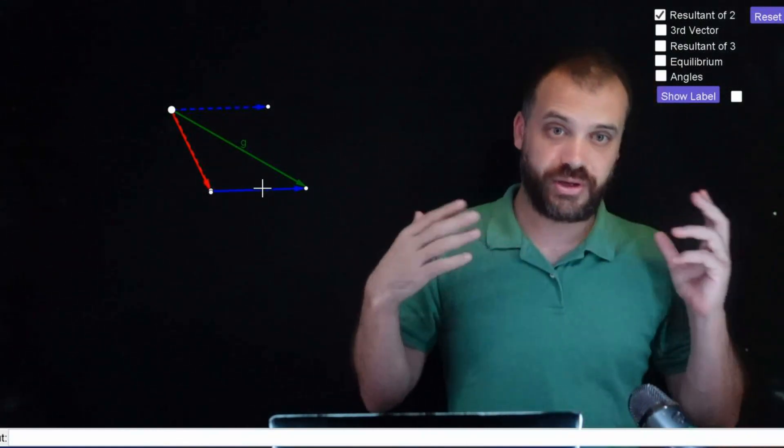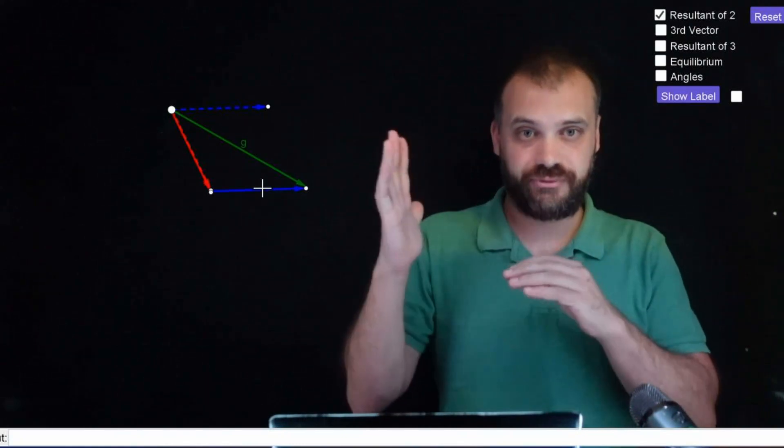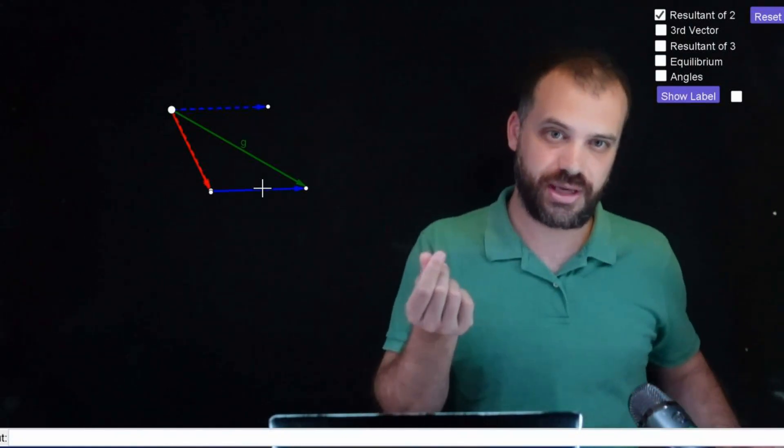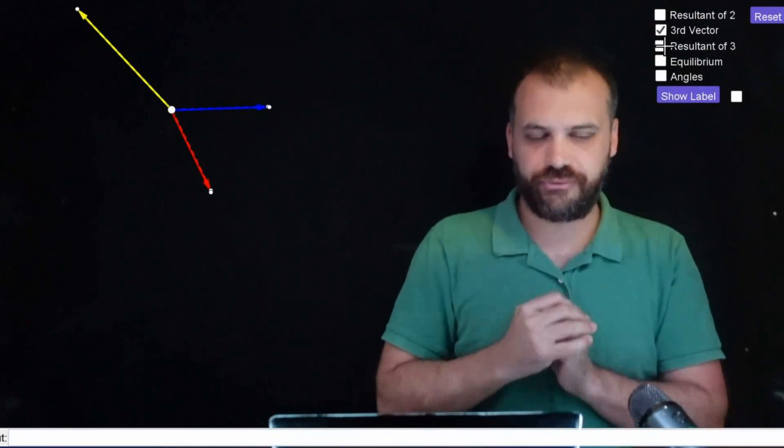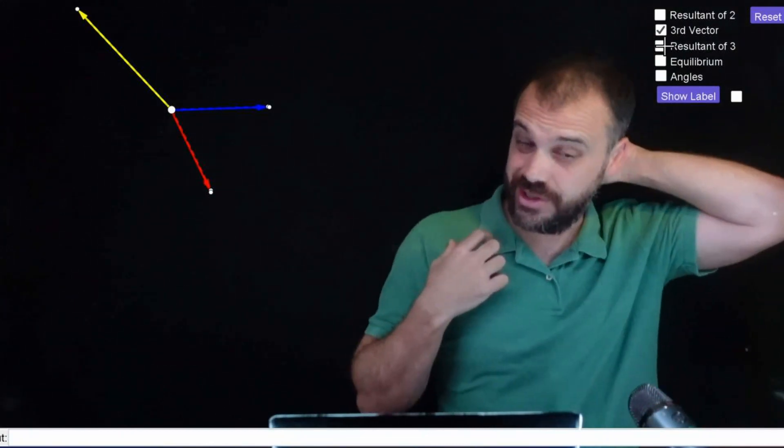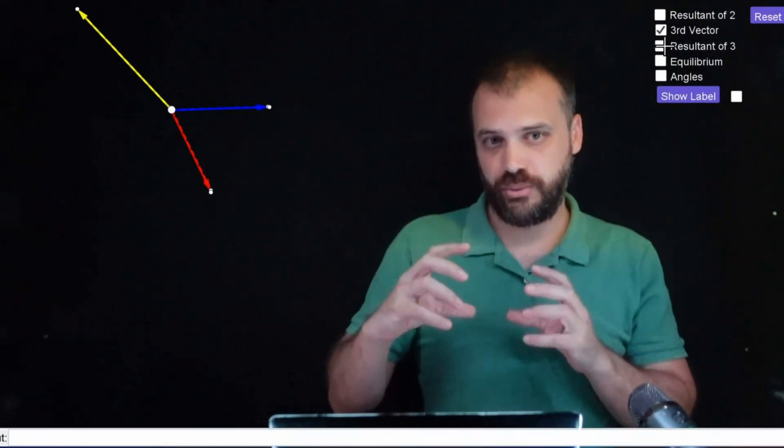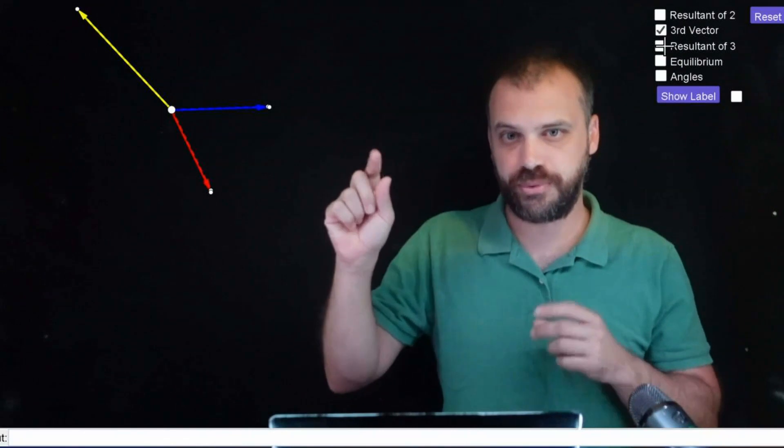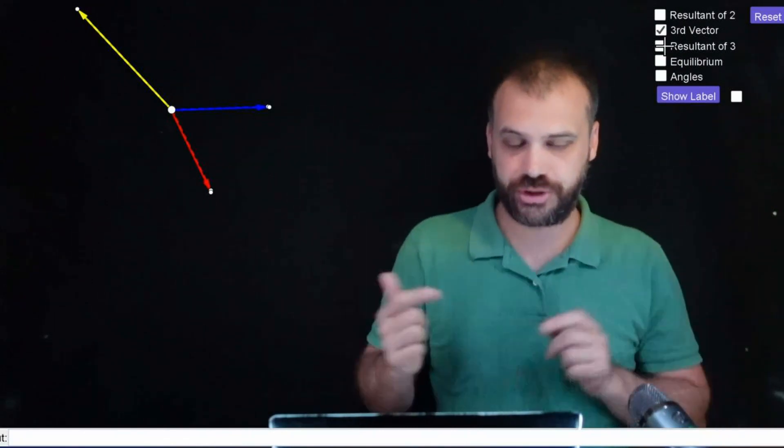So with two vectors, we can find the resultant easily enough, tip to tail. But what if a third person came along? So in yellow is my third person, and you can see they're really pulling this fridge in different directions. Can you picture what the resultant will be? Which way is this fridge going to move with three people pulling in those directions?